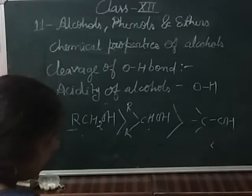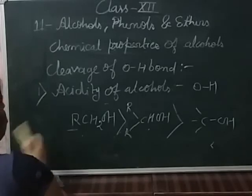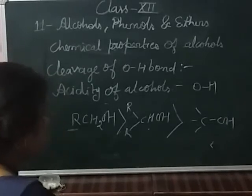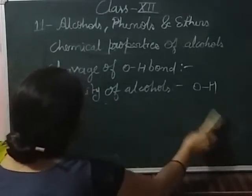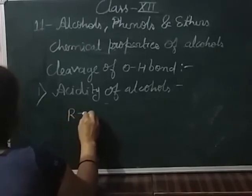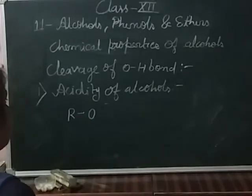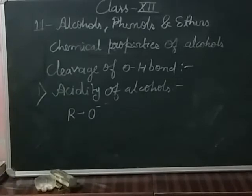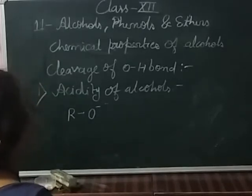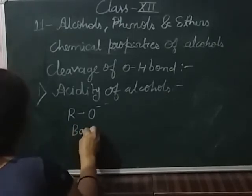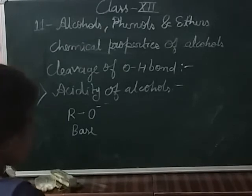This is the decreasing order of acidic strength in alcohols. Generally, alcohols are weaker acids than water. This can be understood by the following example: when a proton is released from alcohol, the resulting species RO⁻ is known as an alkoxide ion, and it is a strong base.